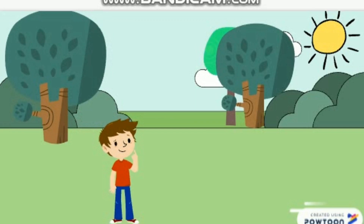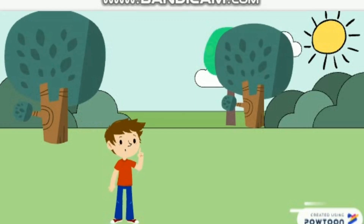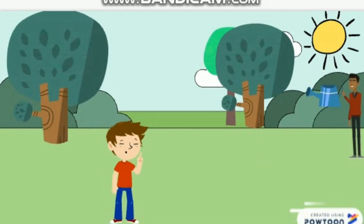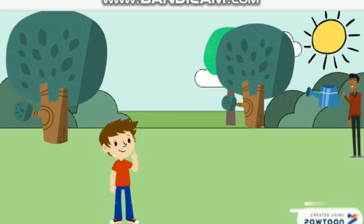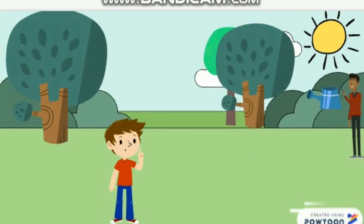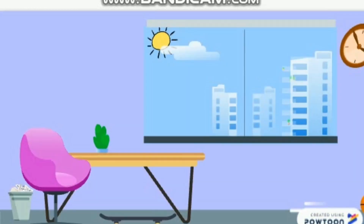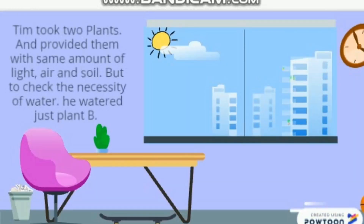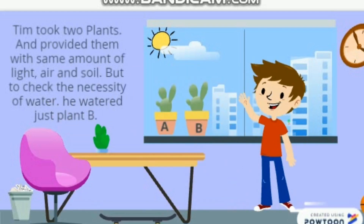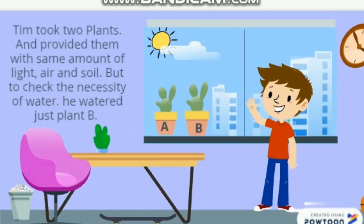One day Tim was playing in the garden. He saw a man watering a plant, and a question came in his mind: what if we don't water the plant? To check that, Tim decided to do an experiment. Tim took two plants and provided them with the same amount of light, air, and soil, but to check the necessity of water, he watered just plant B.